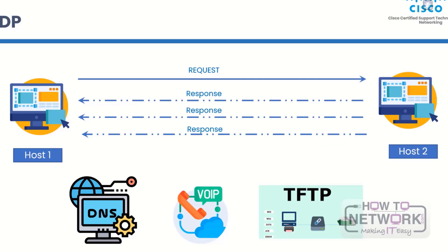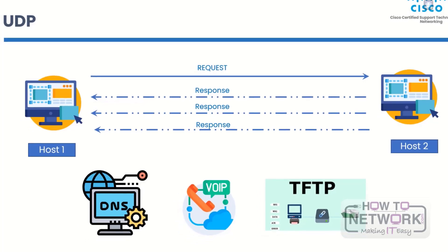UDP, or User Datagram Protocol, operates on the principle that reliability or guaranteed delivery is not always needed or even wanted. For example, if one or two parts of a VoIP stream don't arrive, it would only stop the stream for a short time — the user might not even notice. Real-time applications like VoIP streaming can handle dropped packets as long as the overall number of dropped packets is low. Common applications that use UDP include DNS, VoIP, and TFTP, or Trivial File Transfer Protocol. UDP gives applications best-effort delivery and doesn't need to track the state of data already sent.